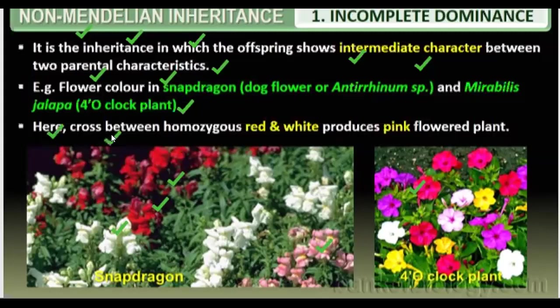A cross between homozygous red and white produces pink-flowered plants. If we cross red and white flowers, they are actually able to produce the pink-flowered plants — known as the snapdragon and the four o'clock plant. We have learned what is dominant — recessive genes or enzymes inhibit or suppress it, or it is non-functional.